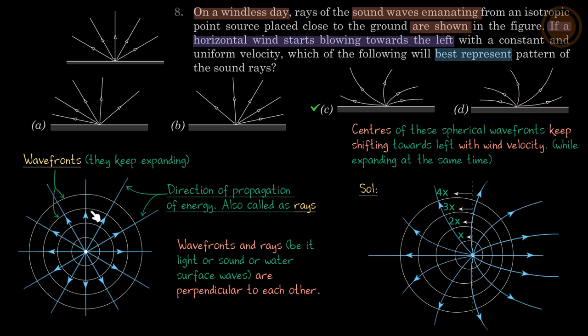So rays we can't make directly, but we can estimate and we can guess that when the wind blows, how will the wave fronts change? And the wave fronts we will make earlier, then when we make the wave fronts perpendicular lines, that is rays. So let's do that.